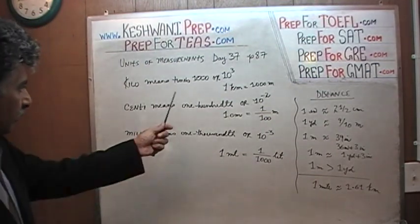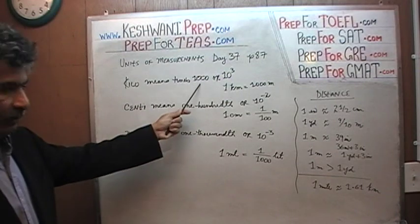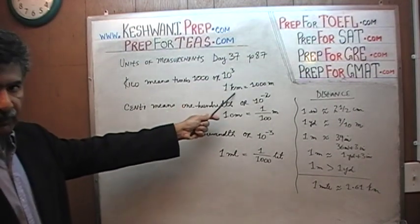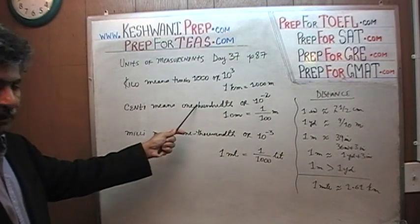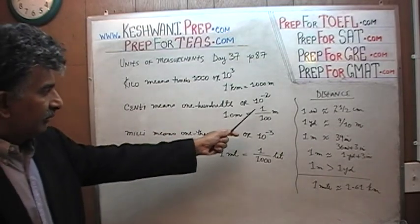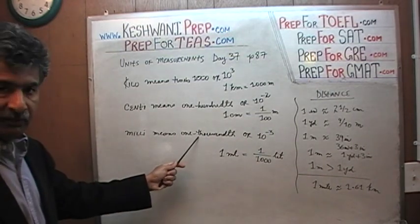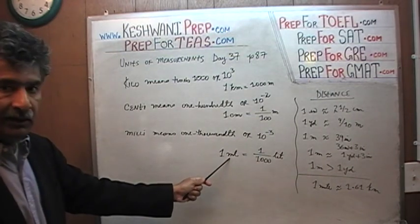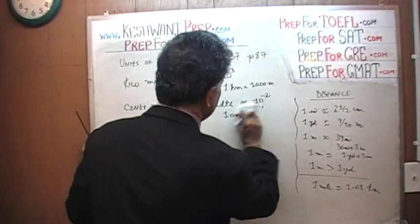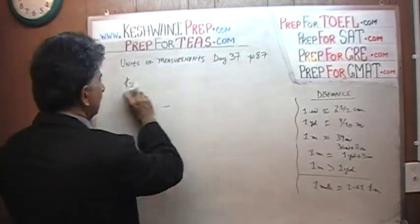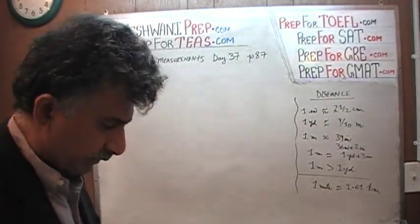I need a lot of room, so we're going to erase all of this. One more time, very quickly: Kilo means times 1,000, or 10 to the 3rd — for example, one kilometer is 1,000 meters. Centi means one hundredth — for example, one centimeter is one hundredth of a meter. Milli means one thousandth of something. I know these are basic, but there they are nonetheless.